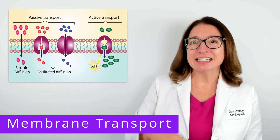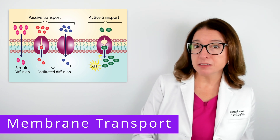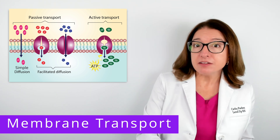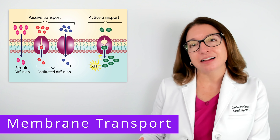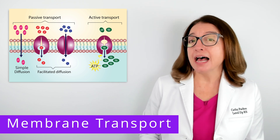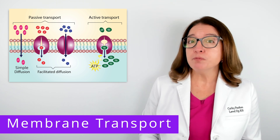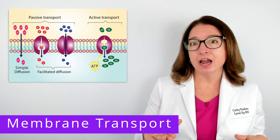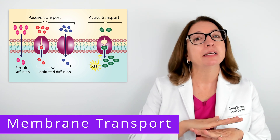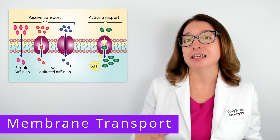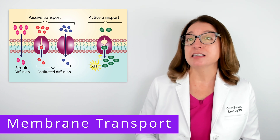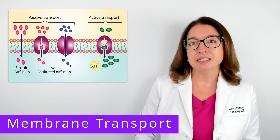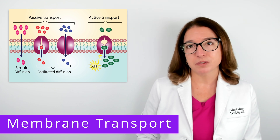There are two basic ways that substances can cross the plasma membrane of a cell. One is passive transport and the other is active transport. With passive transport, the movement of molecules across the membrane does not require energy input, so ATP is not needed. Examples of passive transport mechanisms include simple diffusion, facilitated diffusion, and osmosis.